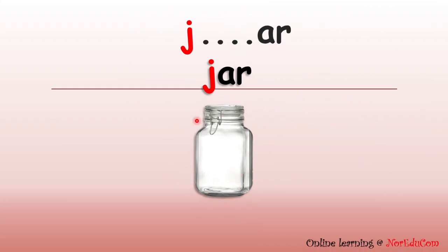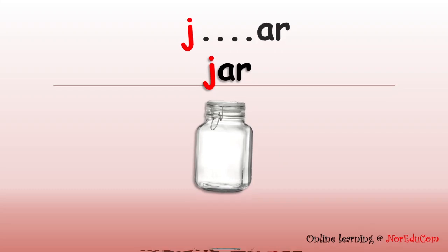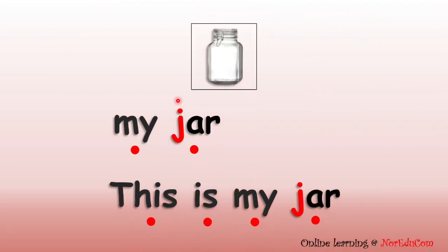Can you name this picture? Yes, this is a jar. J, J, jar. Repeat after me. J, J, jar. Let's read. My jar. This is my jar. Let's read it again. My jar. This is my jar. Well done, everybody.